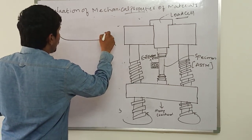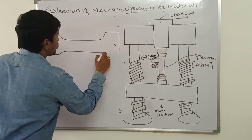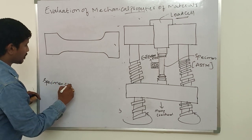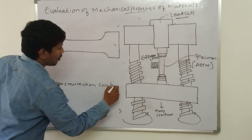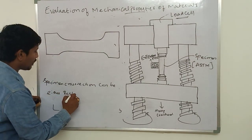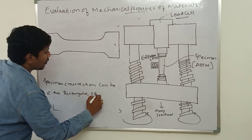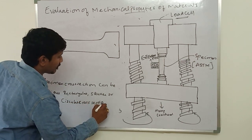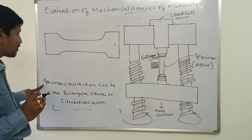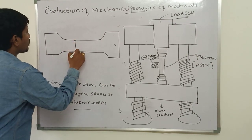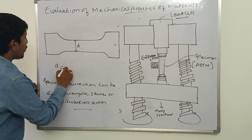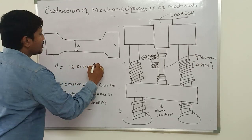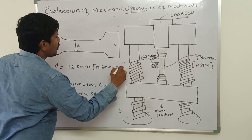You will be taking a standard specimen. The specimen cross section can be either rectangular, square, or circular. As per the ASTM standards, the standard diameter of the specimen is considered as 12.8 mm, generally in the range of 12.5 mm plus or minus 0.3 mm.